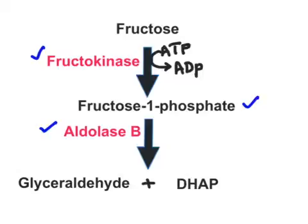Glyceraldehyde and dihydroxyacetone phosphate both enter glycolysis, where they are diverted into pyruvate formation and then into acetyl-CoA. That acetyl-CoA ultimately feeds into fatty acid synthesis, cholesterol biosynthesis, and fatty acid molecules can be diverted into triacylglycerol formation. So overall, when fructose is consumed — especially under well-fed conditions — it promotes fatty acid and triacylglycerol accumulation in adipose tissue.